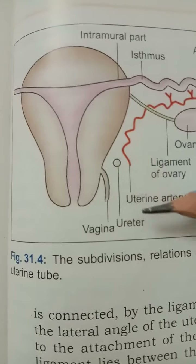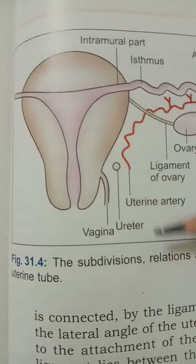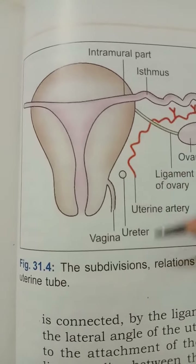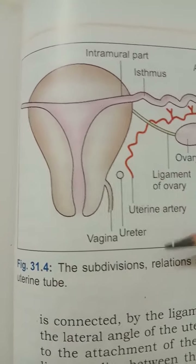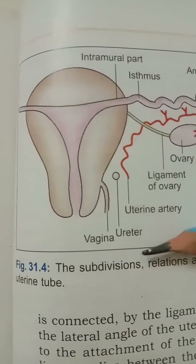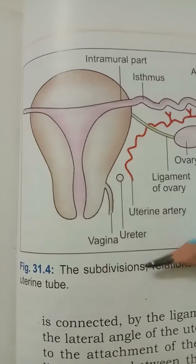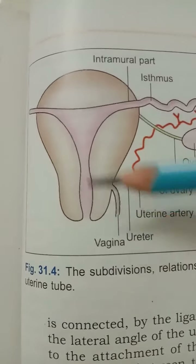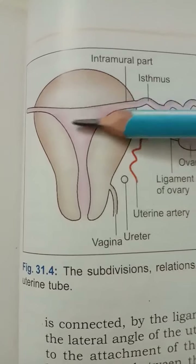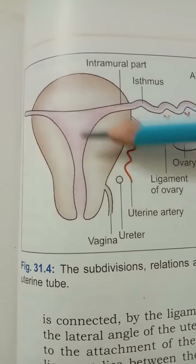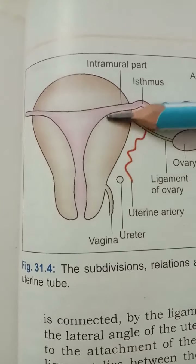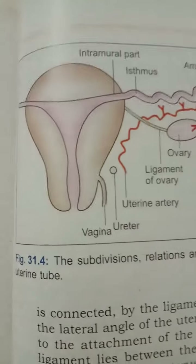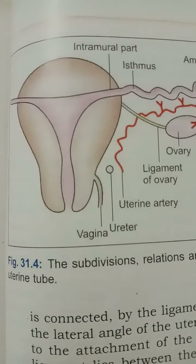The structure of the cervix is different from the body in that it is not lined by endometrium and does not show the cyclic changes that occur in the endometrium of the uterus.